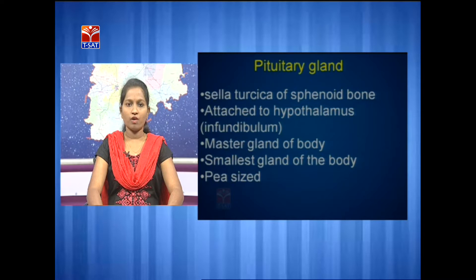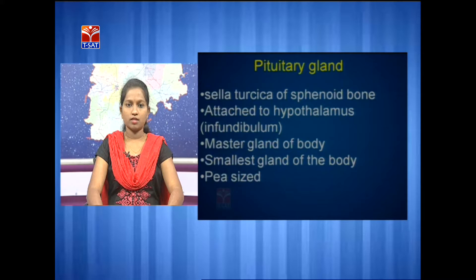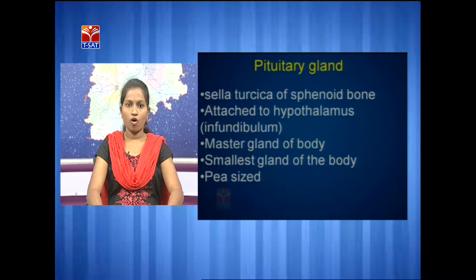The pituitary gland is also called the master gland of the body because, being a small gland, it controls the overall functions of the body. The nine different hormones secreted by this pituitary gland target nine different organs. This pituitary gland shows its effects mainly on the heart, kidney, and muscles, and because it controls major organs and functions of the body, it is called the master gland.